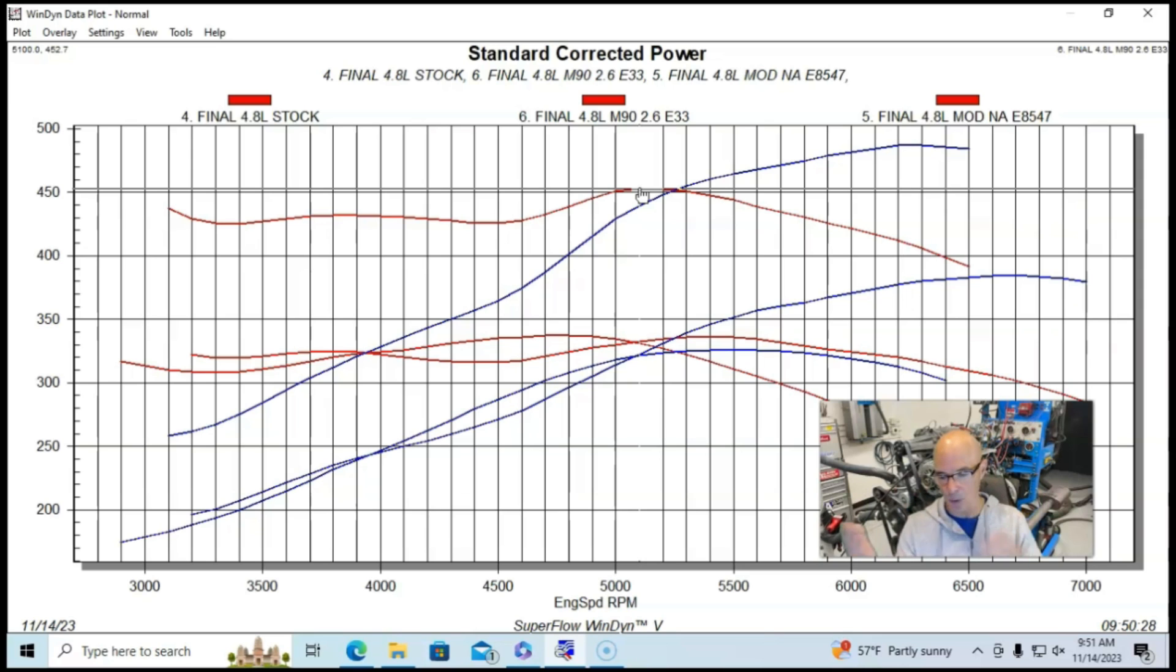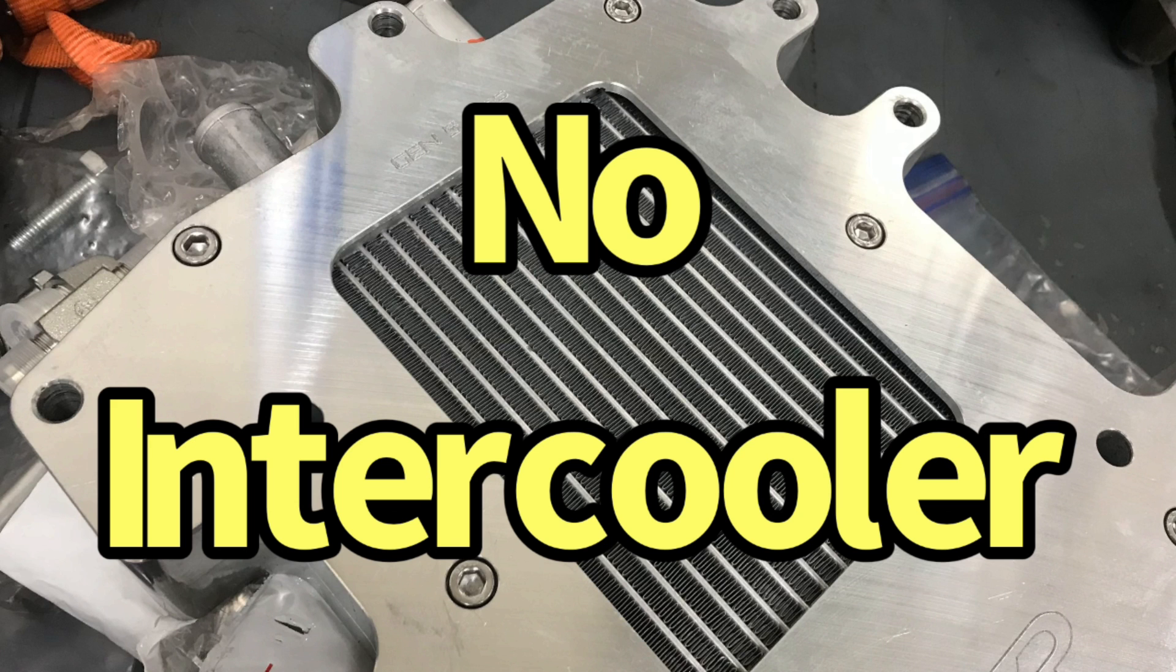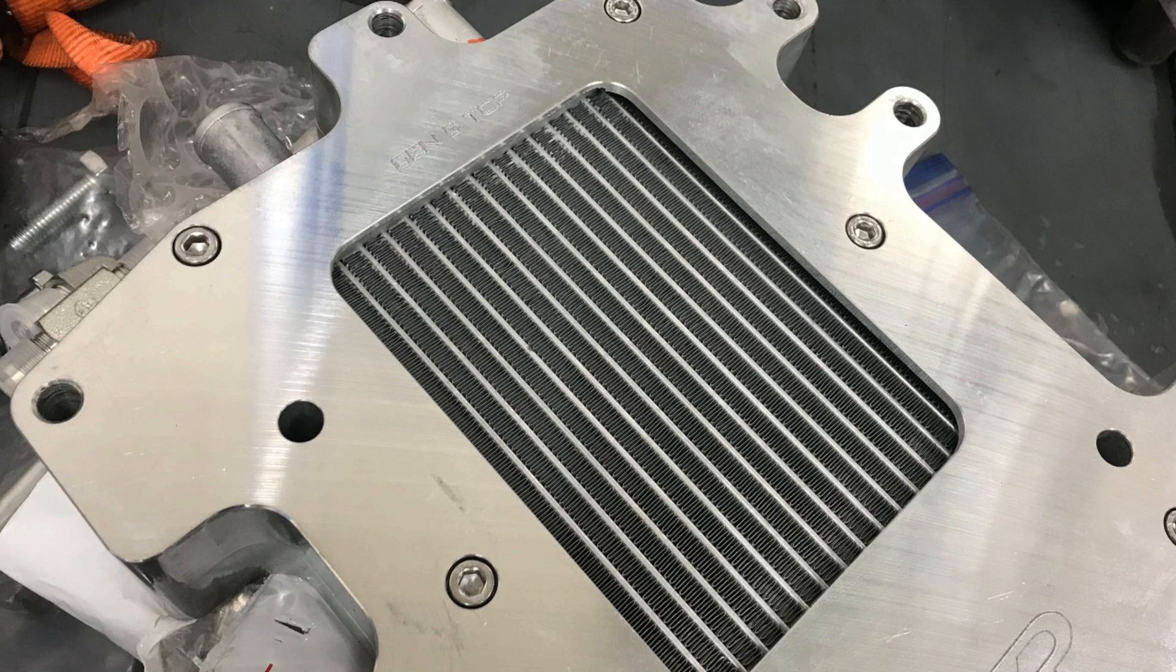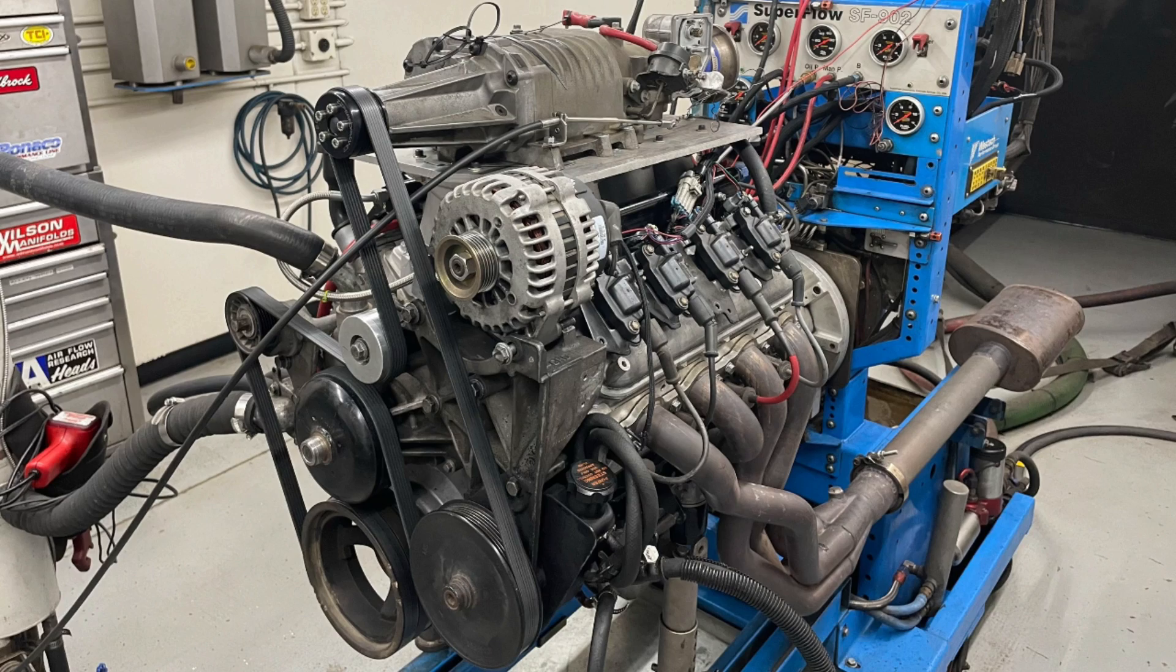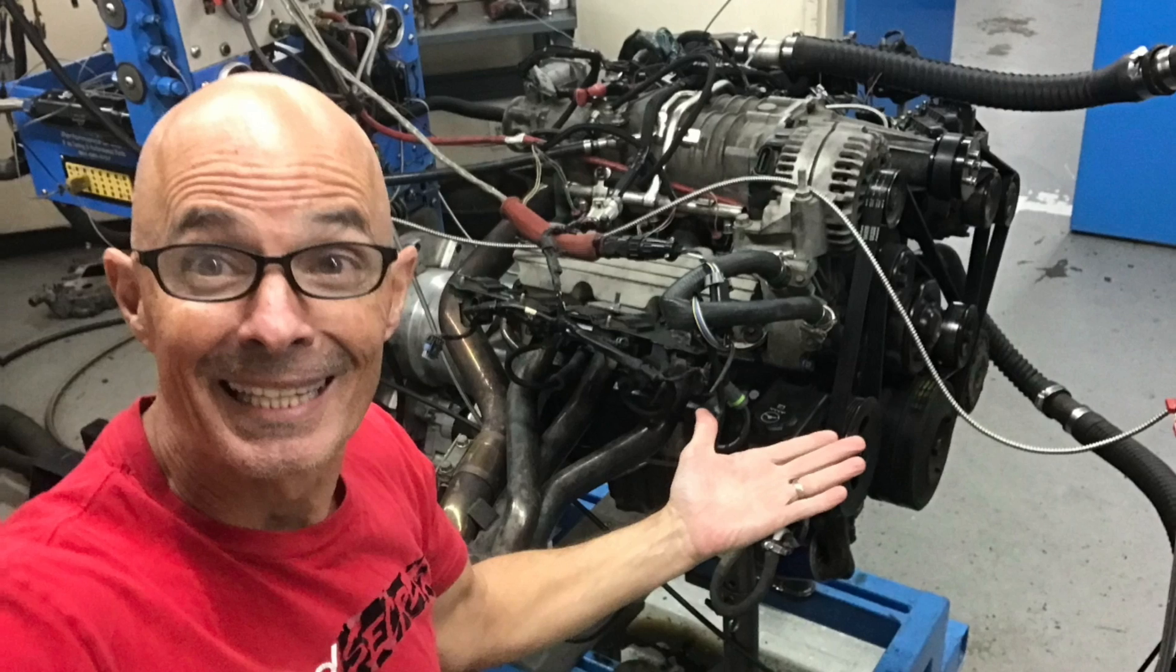Like the 3800, we also ran this on E85 so we could optimize the timing. This one, however, did not have an intercooler. And if we look at a comparison between the two, I'll go ahead and bring those up and we can compare directly the power output of the 4.8 liter with the blower and the 3800 with the same blower.